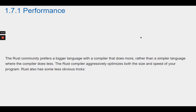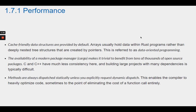Rust also has some less obvious tricks. Cache-friendly data structures are provided by default. Arrays usually hold data within Rust programs rather than deeply nested tree structures that are created by pointers. This is referred to as data-oriented programming. This enables the compiler to heavily optimize code, sometimes to the point of eliminating the cost of a function call entirely.